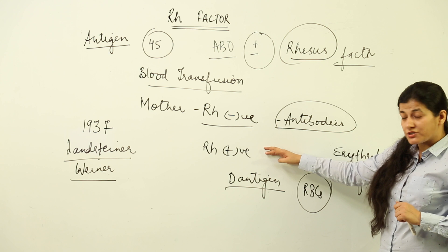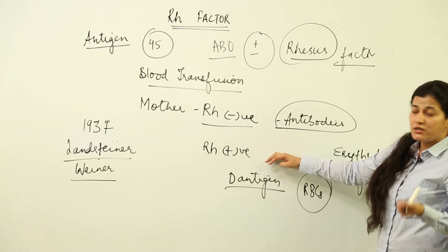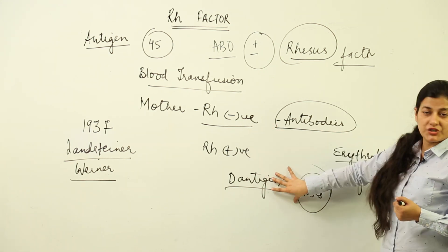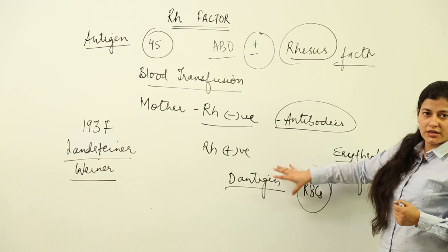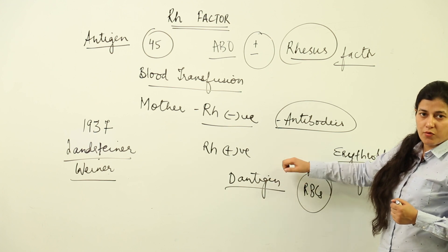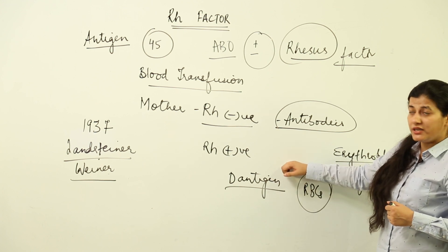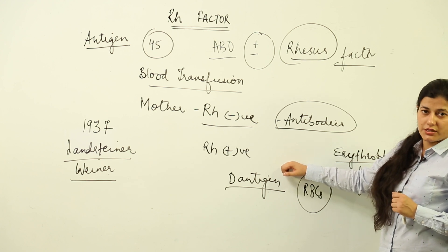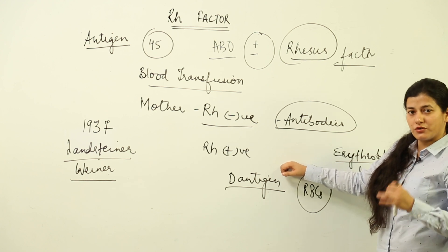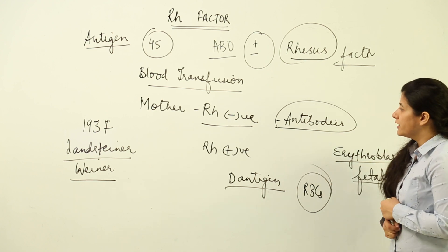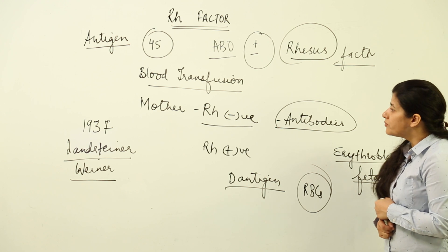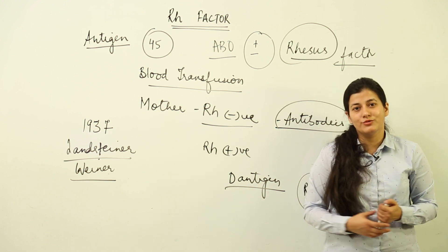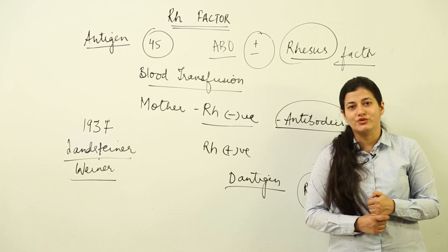They discovered how erythroblastosis fetalis occurs when the mother is Rh negative and the children are coincidentally Rh positive — the second child is in great threat of death, while the first is normally delivered. Keeping this situation in mind, you can understand the importance that Antigen D plays in the immune response of an individual. This is what I want you to understand from this lesson — how the Rh factor works and why it matters.